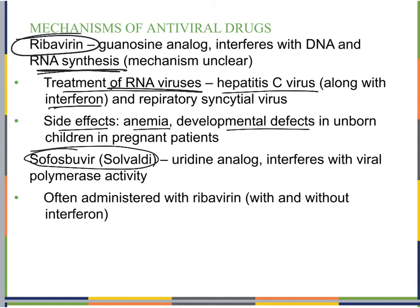Sofosbuvir (Sovaldi) is a uridine analog that interferes with viral polymerase activity. Like the guanosine analogs, it's grabbed instead of the actual nucleoside needed. It's often administered with ribavirin, with or without interferon.